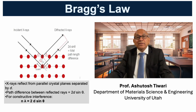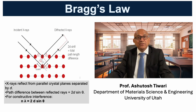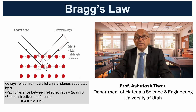Bragg's law provides the fundamental condition for x-ray diffraction. Consider a set of parallel atomic planes separated by a distance d. When a beam of monochromatic x-rays strikes these planes at an angle theta, part of the beam reflects from the top plane and part from the one just beneath it. The second beam travels a slightly longer path by a distance equal to 2d sin theta. Constructive interference occurs when this extra path equals an integer multiple of the x-ray wavelength lambda.